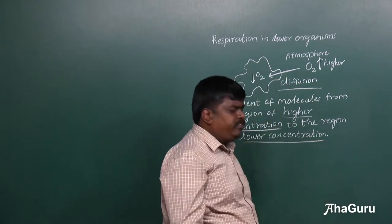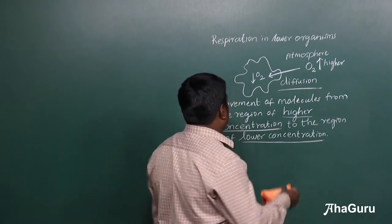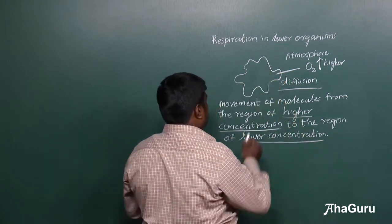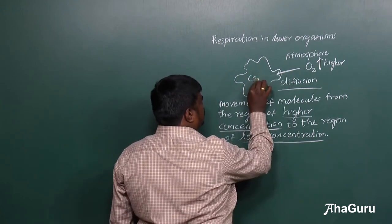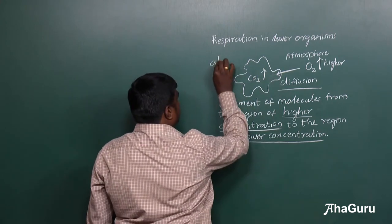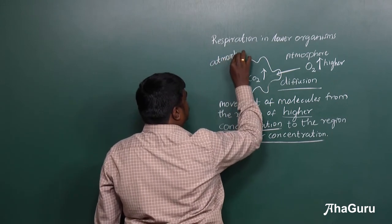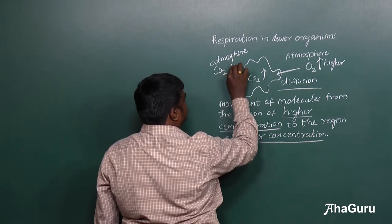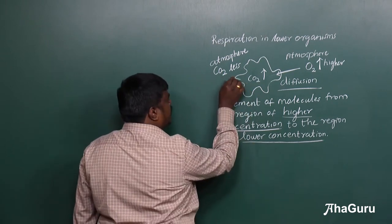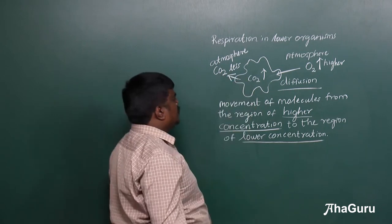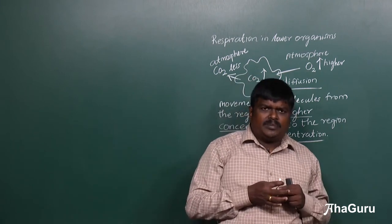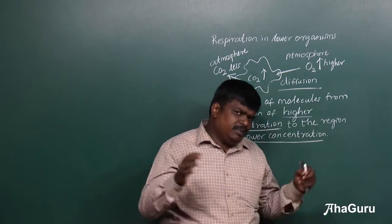Similarly, how do they give out carbon dioxide? It is just the reversal process. Inside the organism, the carbon dioxide concentration will be higher, whereas in the atmosphere the concentration of CO2 is less. So the carbon dioxide diffuses out. This is the simple diffusion process.